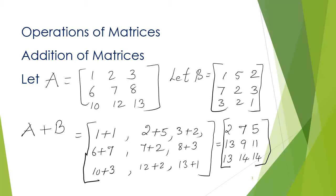Now, we want to add these two matrices. So, look at the first matrix. First row, first column is 1. Look at the second matrix. First row, first column is 1. So, 1 plus 1. Similarly, 2 plus 5, 3 plus 2, 6 plus 7, 7 plus 2, 8 plus 3, 10 plus 3, 12 plus 2, 13 plus 1.